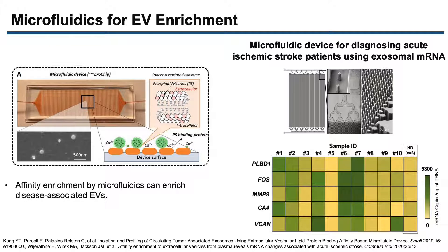Many of the recently reported platforms for the isolation of EVs have been based on the use of microfluidics. By including the appropriate micro or nano scale structures within the chip, approaches including affinity selection, filtration, and centrifugation can be used for EV isolation. Affinity enrichment by microfluidics can enrich primarily disease-associated EVs, improving the quality of the molecular data secured from the isolate.